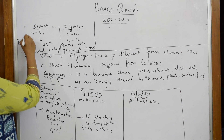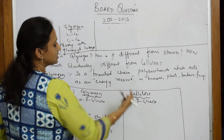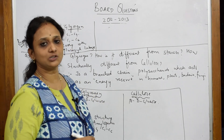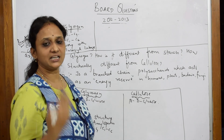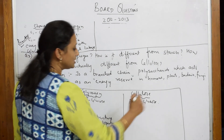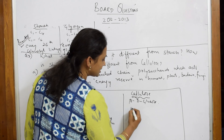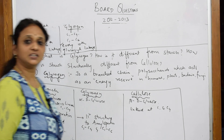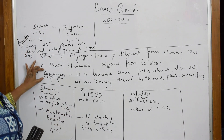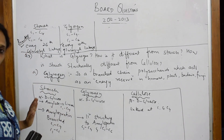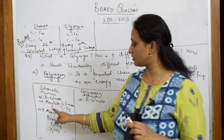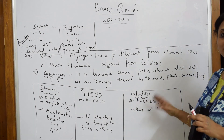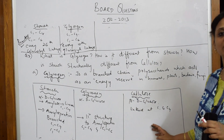Cellulose is made up of beta-D glucose units, with one beta condensing with another beta, linked at C1 and C4 only. That is the main difference. Remember: first write the definition of glycogen, then the structural comparisons. Please watch the previous videos where I have shown the structures of amylose, amylopectin, glycogen, and cellulose — you will clearly understand.